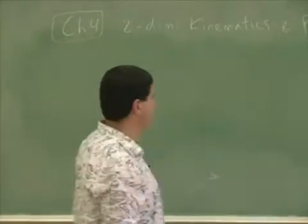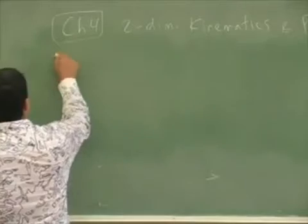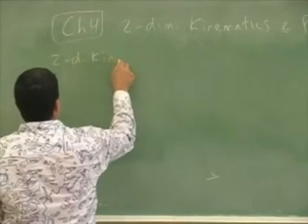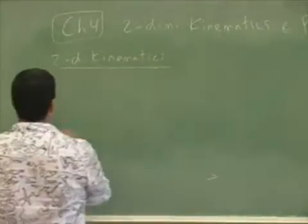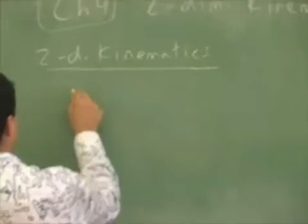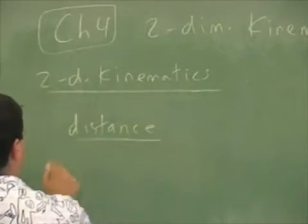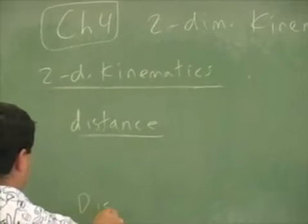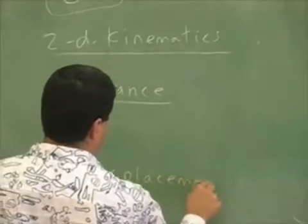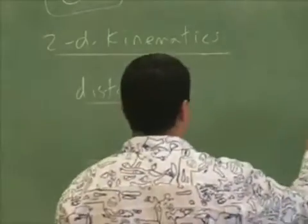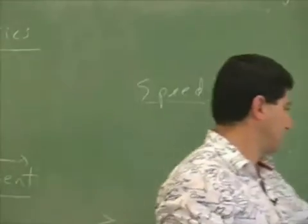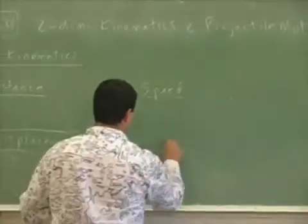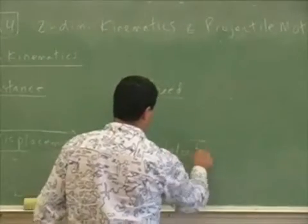In two-dimensional kinematics, we do some of the same stuff we've done before — we define distance, displacement, speed (remember how we started back at the beginning of chapter two), velocity, and acceleration.